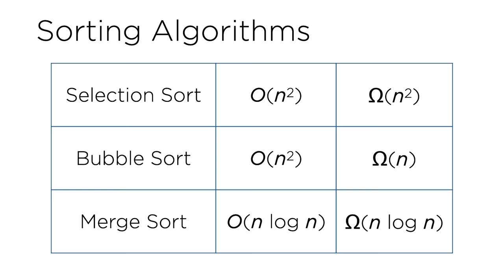Bubble sort also has a big O of n squared — as an upper bound, it still might take on the order of n squared steps to sort n numbers. But it has a big omega of n. That is to say, if we were given an array that's already sorted, bubble sort could sort n items using just n steps, by making one pass through the array, concluding that no swaps are necessary, and stopping. Meanwhile, merge sort has a running time of big O of n log n and big omega of n log n as well, meaning this algorithm takes on the order of n times log n steps to sort all of those numbers — better than n squared, though not nearly as good as big omega of n.